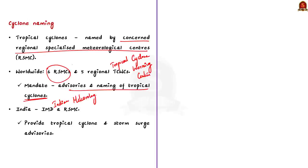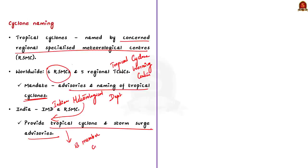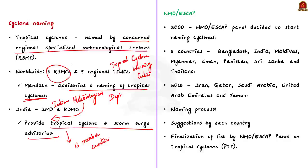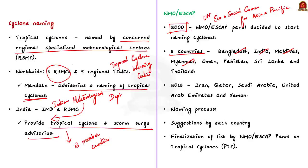In the year 2000, the World Meteorological Organization and the United Nations Economic and Social Commission for Asia and Pacific (WMO/ESCAP) decided to start naming cyclones in this region. This comprised eight countries: Bangladesh, India, Maldives, Myanmar, Oman, Pakistan, Sri Lanka, and Thailand. In 2018, the panel expanded to include five more countries: Iran, Qatar, Saudi Arabia, United Arab Emirates, and Yemen — making 13 member countries of the WMO/ESCAP panel.